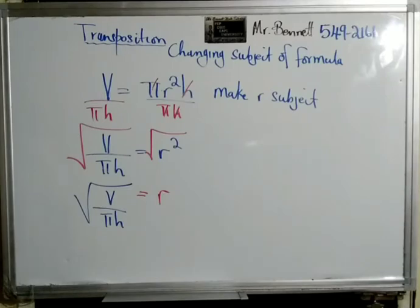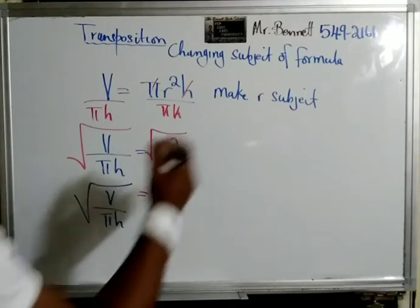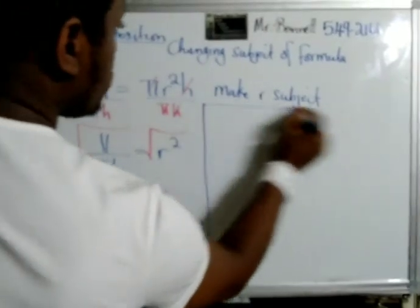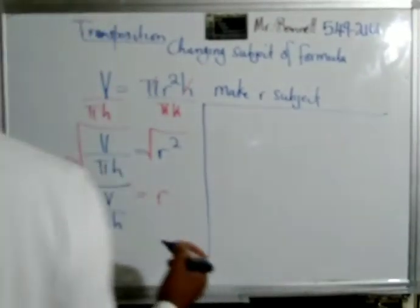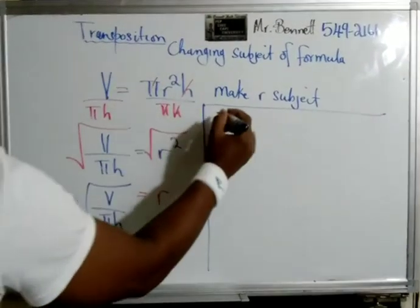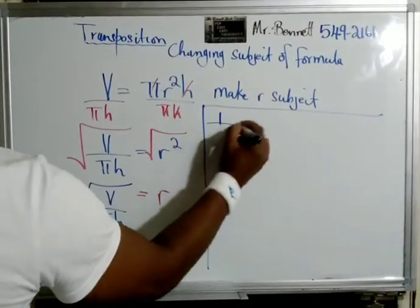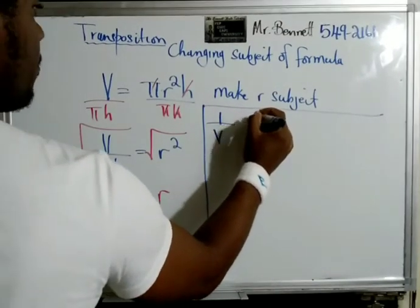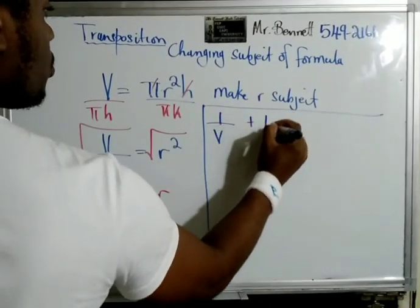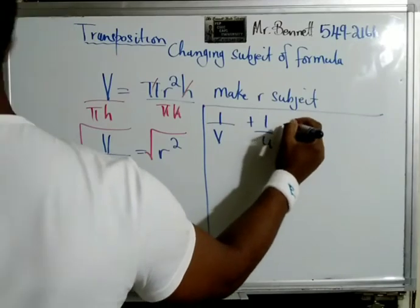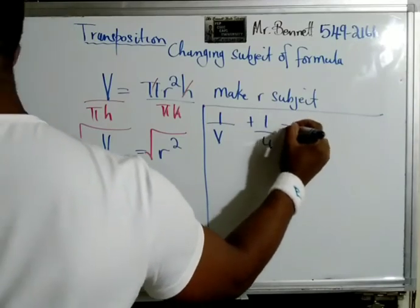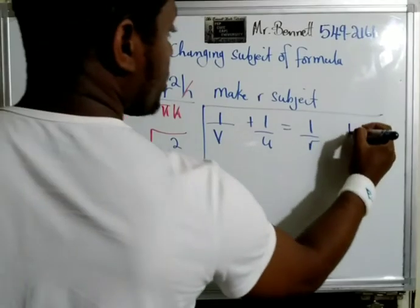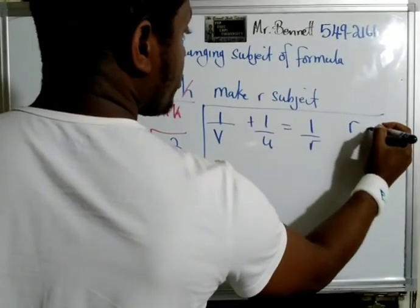All right, let us look at another one — I had this one on my other channel. It goes: one over v plus one over u is equal to one over r, and we are going to make r the subject.